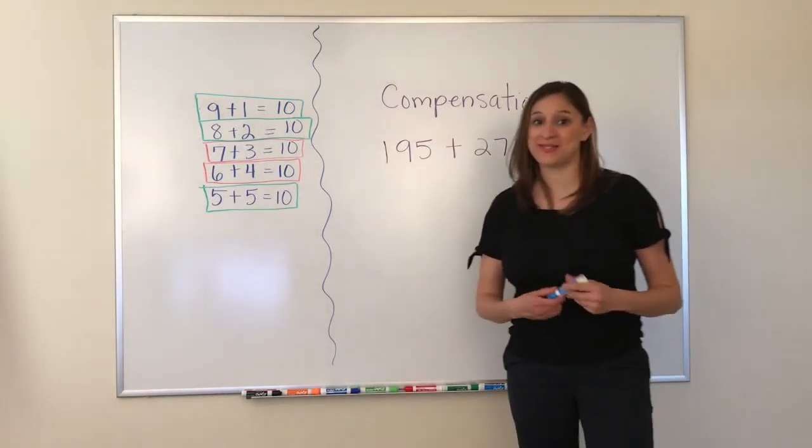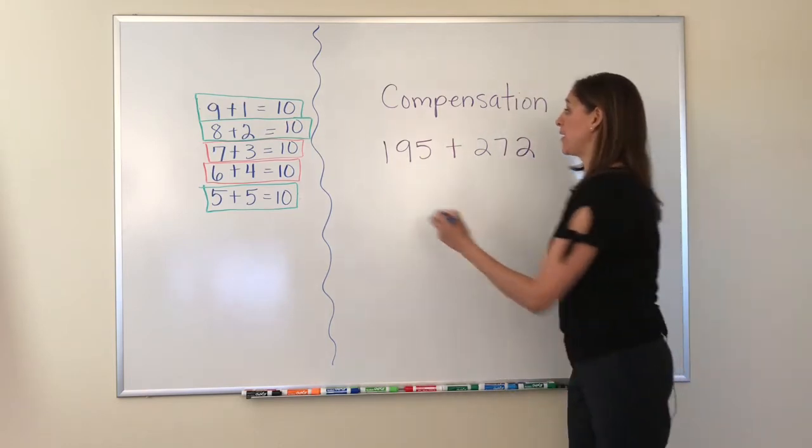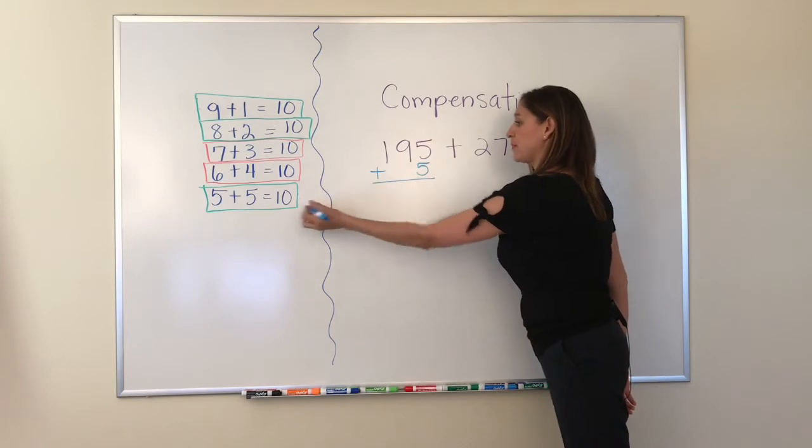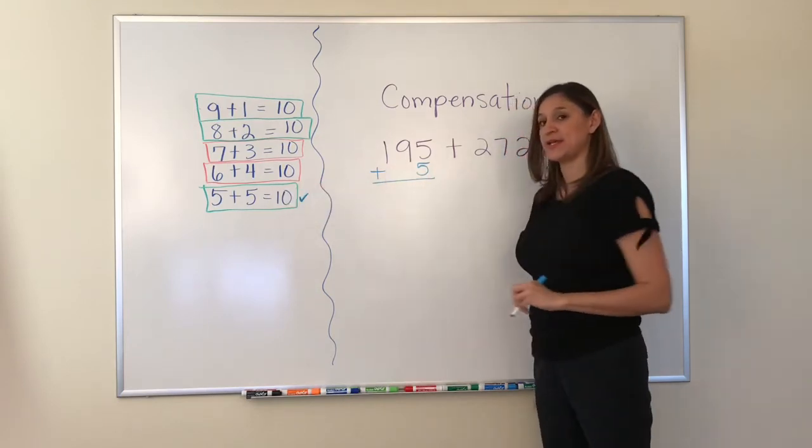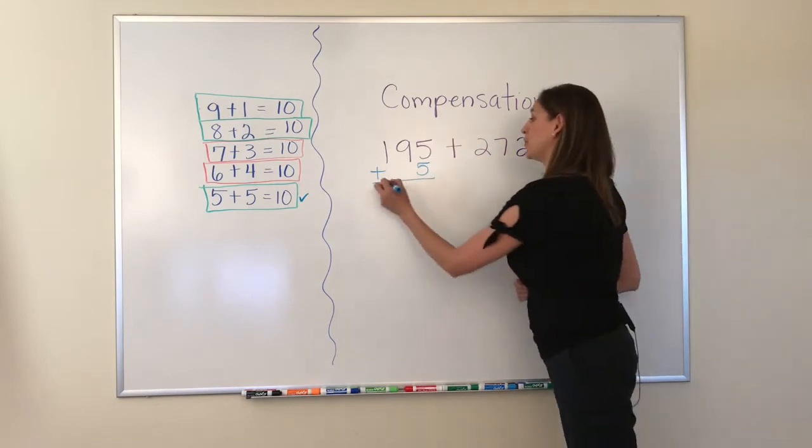Now I am going to show you how to compensate when you add. I am going to add 5 to 195 because I know 5 plus 5 is 10, and if I add 5 more it will move it up to a friendly number that is 200.